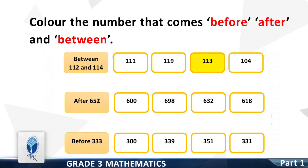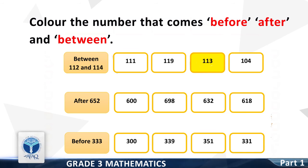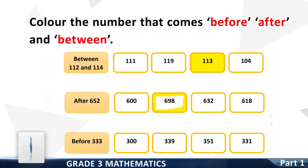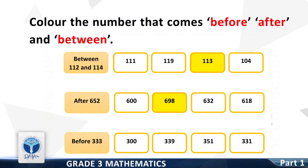Now color the number that comes after 652. Good, it is 698. Color the box. Now color the number that comes before 333. Good, it is 300. Color the box.